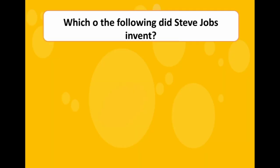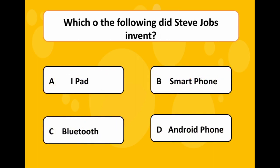Question Number 5: Which of the following did Steve Jobs invent? Options are A. iPad, B. Smartphone, C. Bluetooth, D. Android Phone. The correct answer is Option A, iPad.